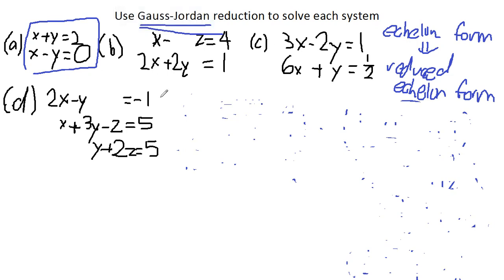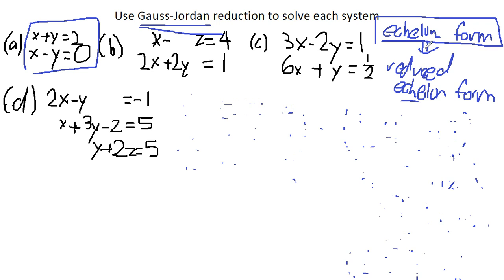Hi everyone. In this video we'll be learning how to use Gauss-Jordan to solve a system of linear equations. Previously we used the Gauss method, but the Gauss method only teaches us to solve in echelon form. So now we'll be learning how to transform echelon form to reduced echelon form. This is known as Gauss-Jordan reduction.